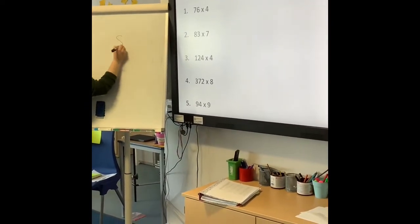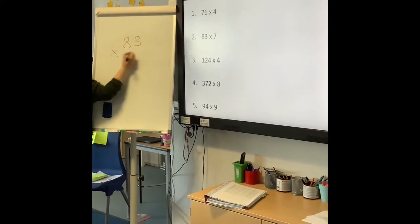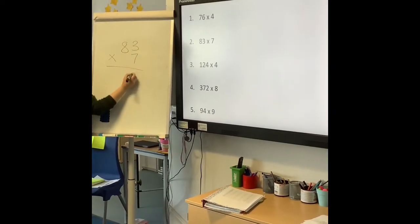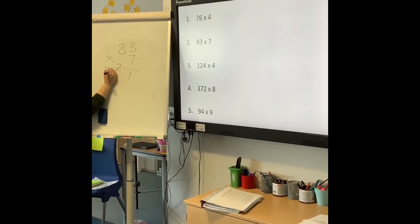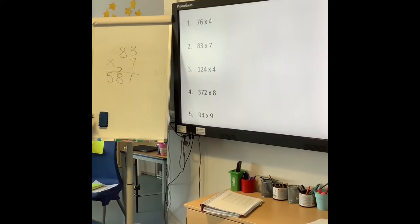Second one, 83 times 7. 3 times 7 is 21, 8 times 7 is 56, add 2 is 58. The answer is 581.